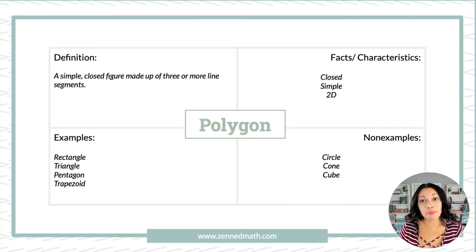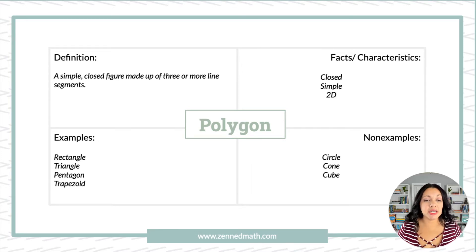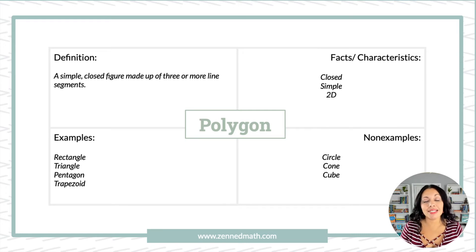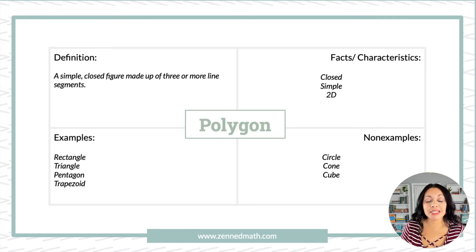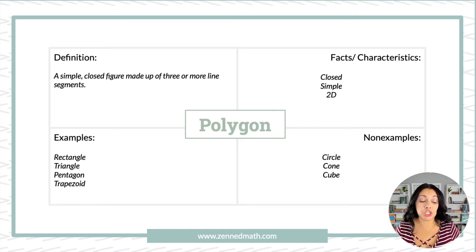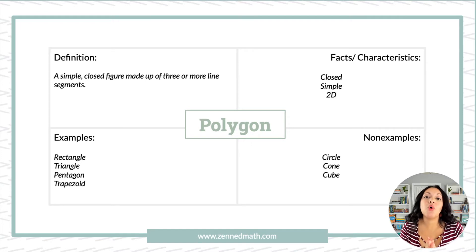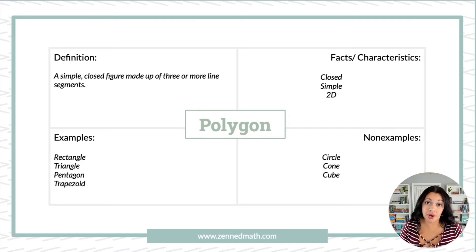For a polygon, my definition was a simple closed figure made up of three or more line segments. My facts: it's a closed shape, a simple shape, a two-dimensional shape. Some examples: rectangle, triangle, pentagon, trapezoids. And things that are not polygons: circles, cones, and cubes. I wanted you to fill that out so you could compare and contrast it to my graphic organizer — and that's something we don't have students do enough.